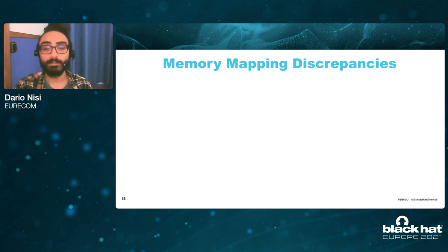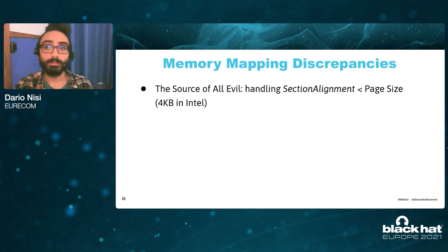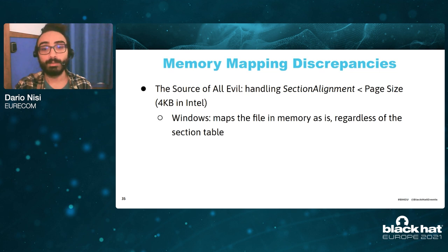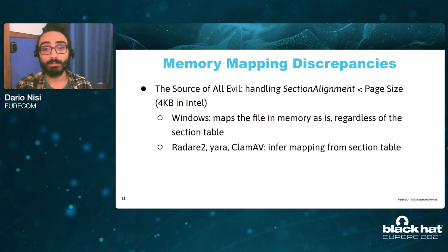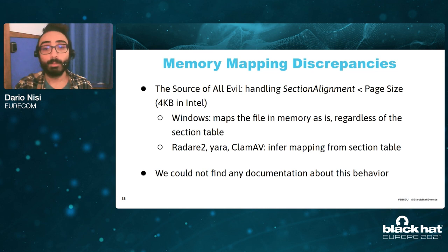We also ran a differential analysis between the memory mapping operations of all this software, and we found one edge case that all the tools we analyzed handled incorrectly — in particular, when the section alignment is smaller than the page size. Executables with these characteristics are mapped by Windows directly in memory as they are, completely disregarding their section table. Radare2 and ClamAV, on the other hand, still infer the mapping of these programs using the section table. We could not find any documentation about this behavior, so we were not really surprised that the tools got this wrong.